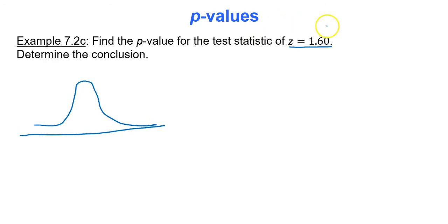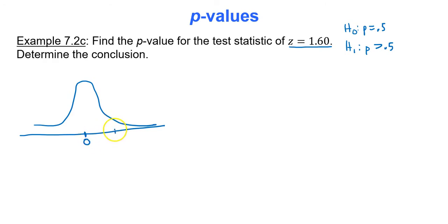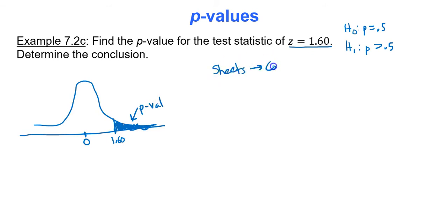Draw your visual. This is the same example — remember our hypotheses: p equals 0.5 and p is greater than 0.5. On our standard normal curve, the mean is 0. So z = 1.60 is somewhere to the right of 0. We want to find the area to the right of 1.60. This is a right-tailed test, so the rejection region should be the right tail. To find the p-value, go to Google Sheets, the compute tab, then the normal region.